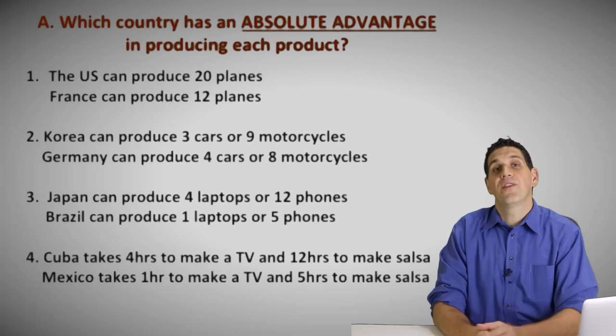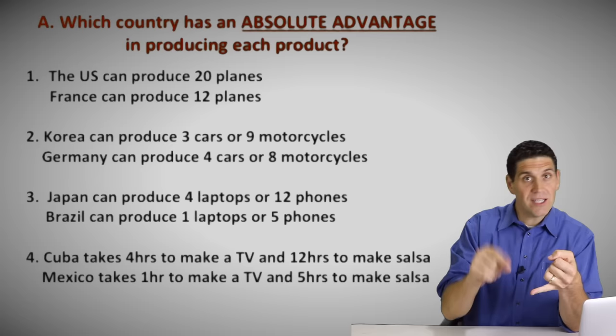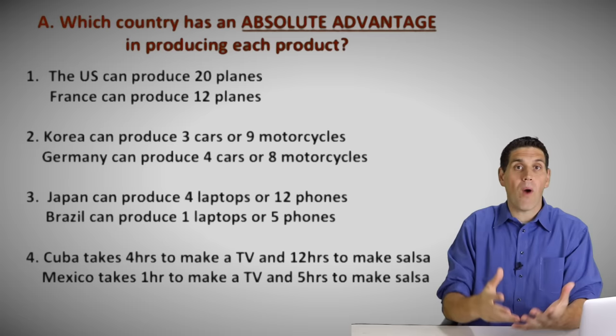The first concept you have to practice is something called absolute advantage, and it is easy — ridiculously easy. It's just the idea of who is better at producing something. When you're better at producing something, you either produce more of it or you need less resources to produce the same amount as another country. So either you can make more, or you require less resources.